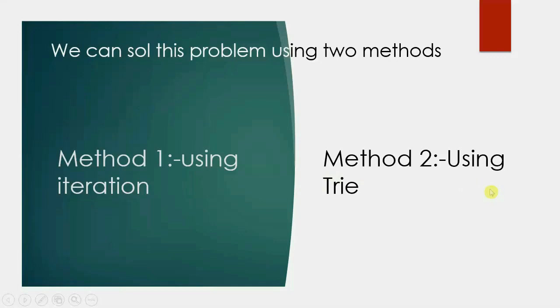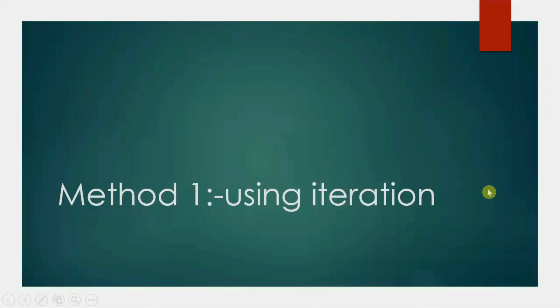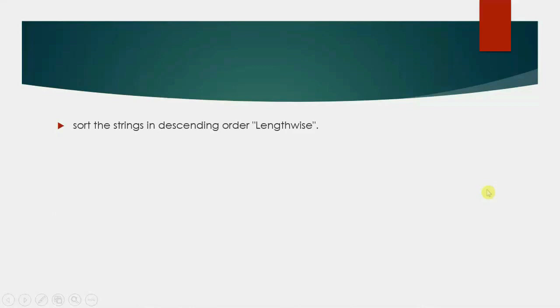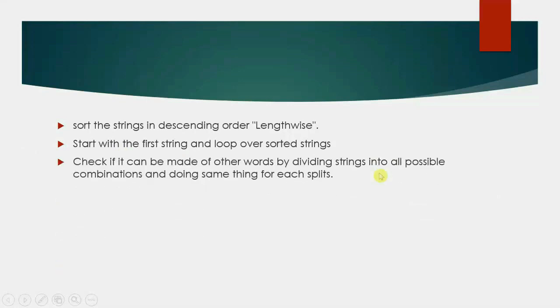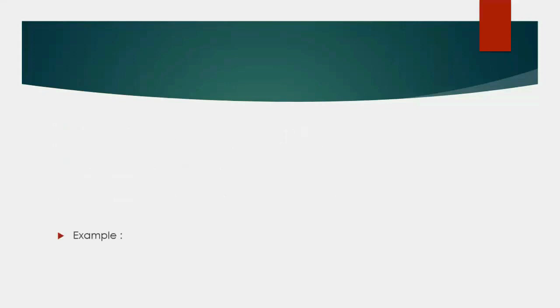Method 1 using iteration: sort the strings in descending order lengthwise. Start with the first string and loop over the sorted strings. Check if it can be made of other words by dividing strings into all possible combinations, and for each split check if both the left and right side are contained in the list.